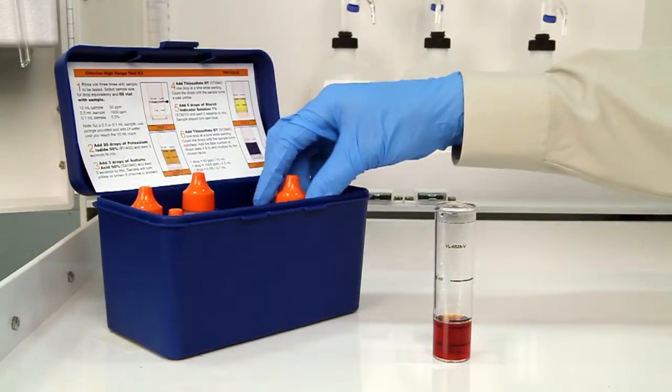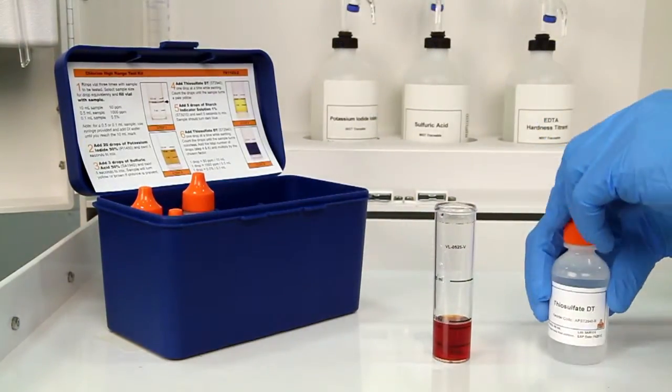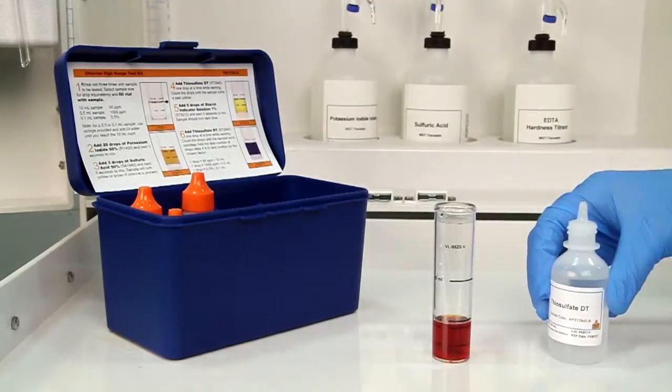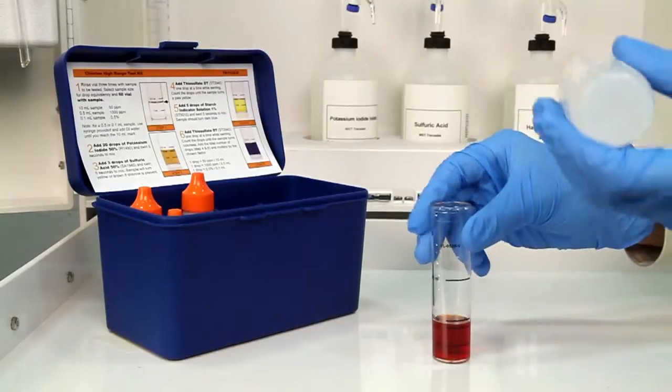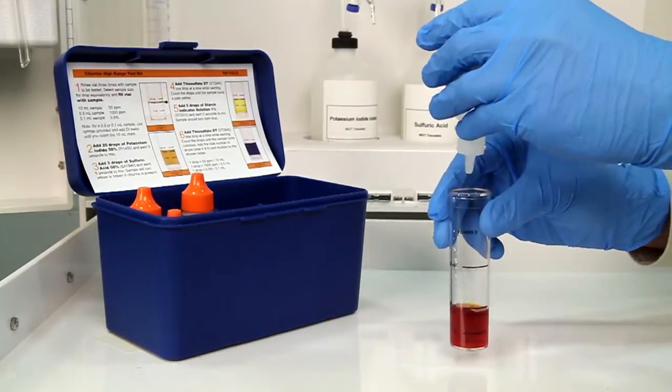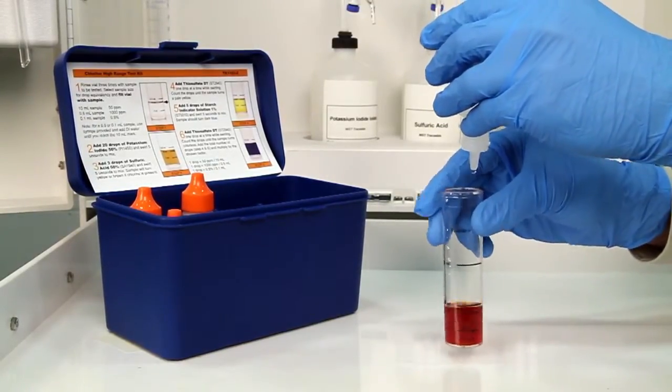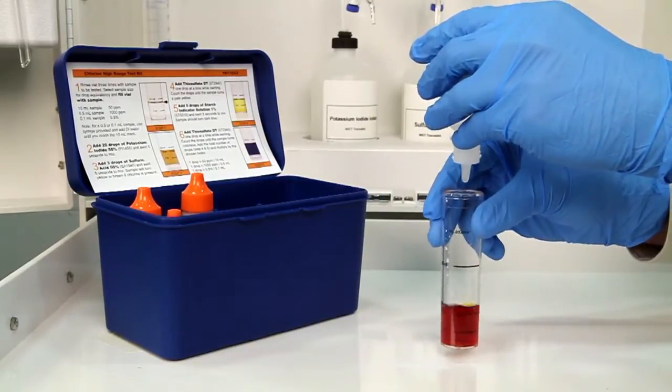The next step is to perform the first titration using thiosulfate DT. Each bottle of titrant is labeled with the equivalency and sample size it was manufactured for. It's important to make sure you have the proper titrant and the proper sample size for this titration.